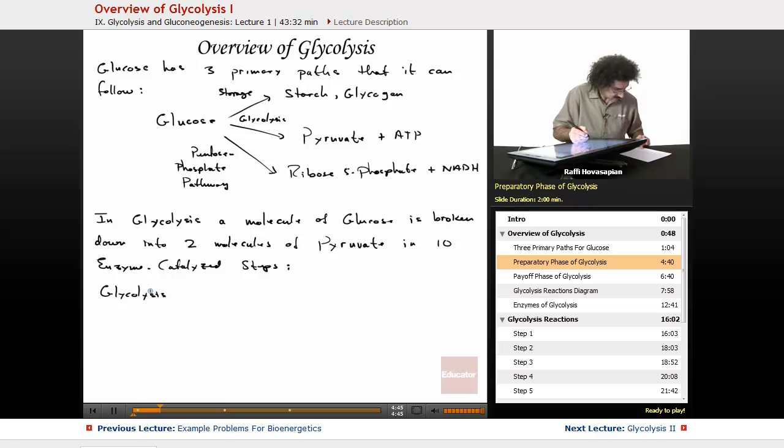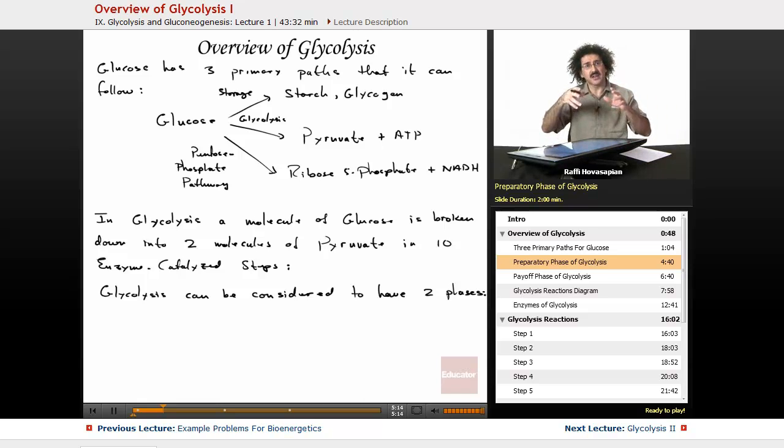Now, glycolysis can be considered to have two phases. When we talk about these two phases, the preparatory phase, the payoff phase, or sometimes they call it the investment phase and the payoff phase, please understand that this is an artificial categorization based on how we want to look at things. When things tend to get a little bit too complex, we like to break them down into smaller pieces. There is a preparatory phase and a payoff phase, and you'll see what that means when we get into the details. But you don't have to actually look at glycolysis that way if you don't want to.